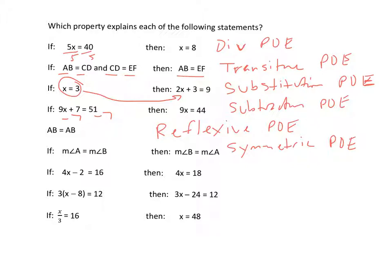4x minus 2 equals 16. Then 4x equals 18. We did that by adding 2 to each side. So this is the addition property of equality.